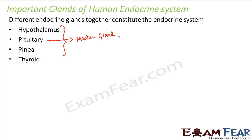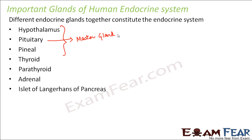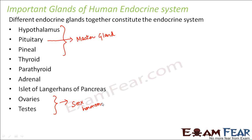The thyroid gland is located near the voice box. Then we have parathyroid, adrenal gland, and the islet of Langerhans of the pancreas — that is the endocrine part of the pancreas. We also have ovaries and testis, which we have already discussed since they release the sex hormones: testosterone and estrogen. Now we will focus on the important ones — pancreas, adrenal, thyroid, and pituitary.